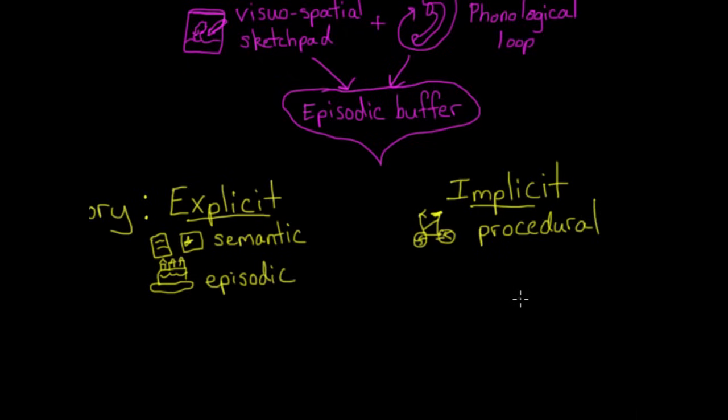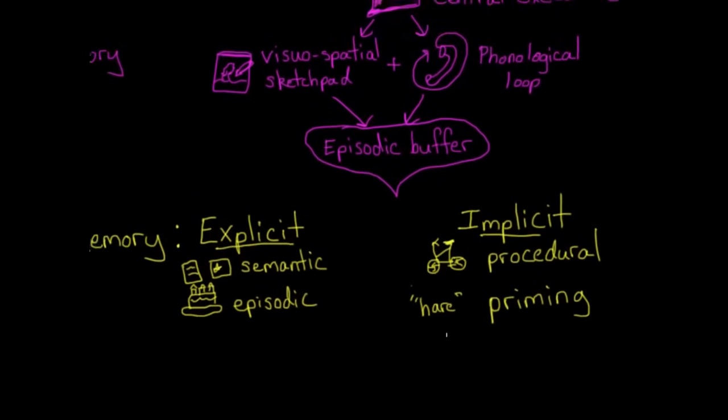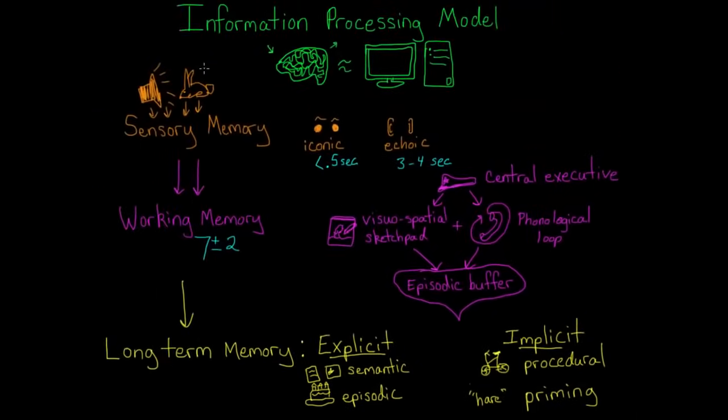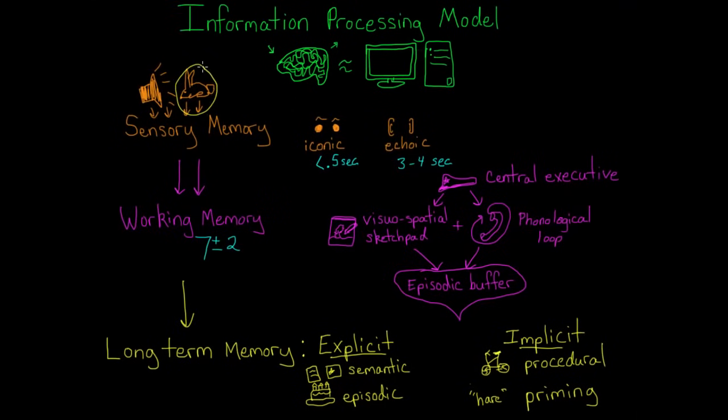The last type of implicit memory is called priming, which means that previous experience influences your current interpretation of an event. For example, if I say the word hair, what do you think of? If you paid attention at the beginning of this video, then you might have thought of hair as h-a-r-e, meaning rabbit, because you were primed with the bunny picture at the beginning. Your recent experience of seeing a bunny stayed in your memory and influenced your interpretation of the word that I said.